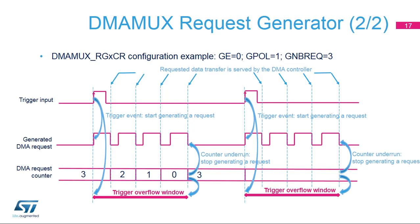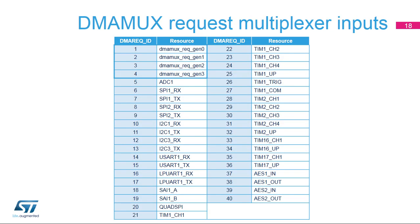On a trigger event, a programmed number of DMA requests (GNBREQ plus 1) is generated. There may be a trigger overflow if two trigger events occur before GNBREQ plus 1 requests and data transfers are completed. The table shows the STM32WB mapping of the DMA MUX request multiplexer inputs for any channel. Assigning a request input is programmed by the DMA REQ ID for any DMA MUX request multiplexer channel or DMA MUX CX CR register. The same request input must not be mapped to two different channels.